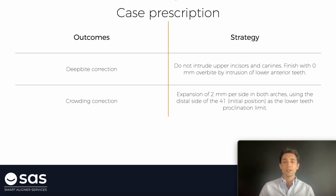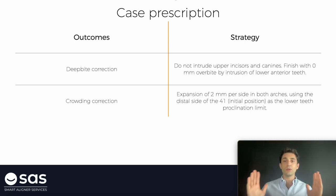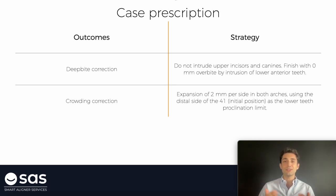Crowding correction. On crowding cases, we want to translate to the technician the limits for expansion or for proclination. Here I am explaining to expand 2 mm per side in both arches, and also use the distal side of tooth 41 — the initial position of the distal side of 41 — as the limit for anterior proclination. I am creating virtual walls on posterior sectors and on anterior teeth for achieving the final result, to complete the crowding correction with those limits. I don't want to move any tooth out of those virtual walls, because those virtual walls represent the basal bone of the patient.